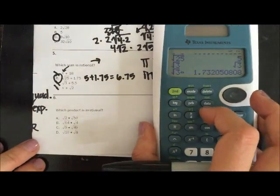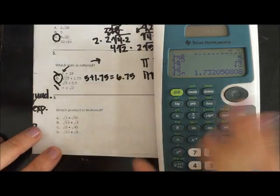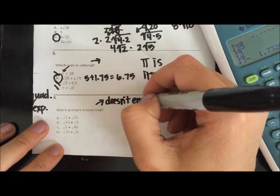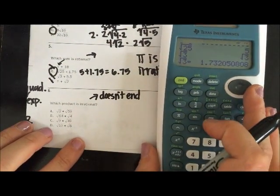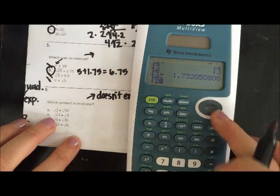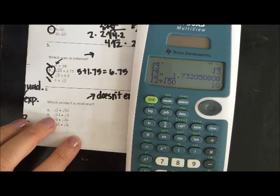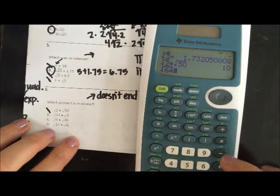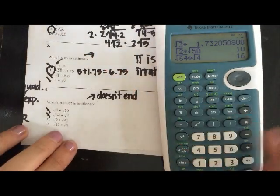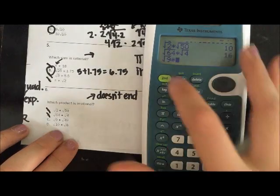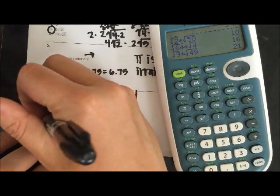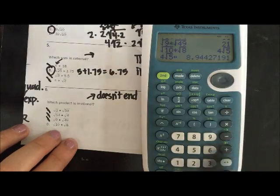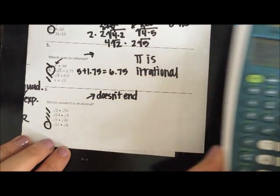So speaking of irrational, number 6 asks us for which product is irrational. Remember irrational, I think in your head, doesn't have an end, is not a solid ending number. So let's type these in our calculator. Square root of 2 times the square root of 50, that's 10. That's a whole number so we're safe there. Square root of 64 times the square root of 4, that's 16. We look to be safe. Square root of 9 times the square root of 49, that's 21. Square root of 10 times the square root of 8. Oh, this is not a whole number and I see it has all that messiness at the end. So D would be your best option.